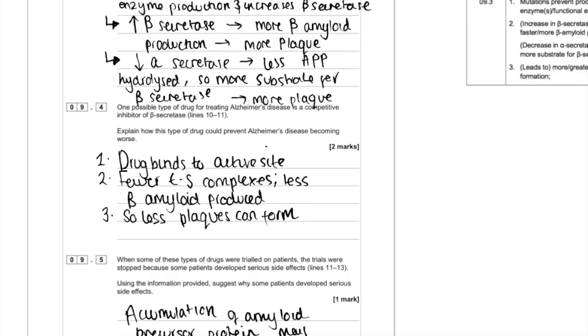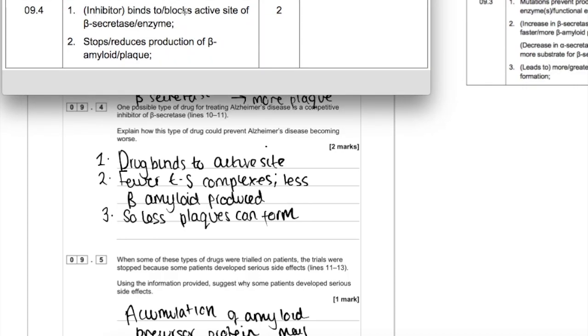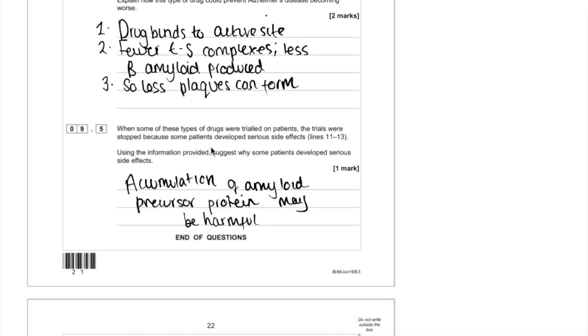But importantly, therefore, there's less beta amyloid produced. That's the thing that contributes to plaques. So less plaques can form. You can see here I've just bullet pointed out my answers so I can see that I fully answered the question. The inhibitor binds to and blocks the active site and stops the production of beta amyloid plaque.